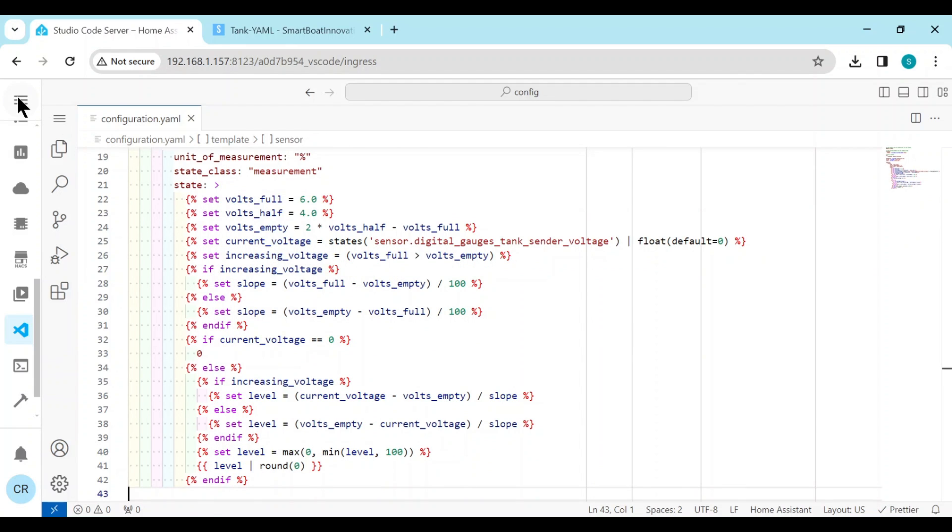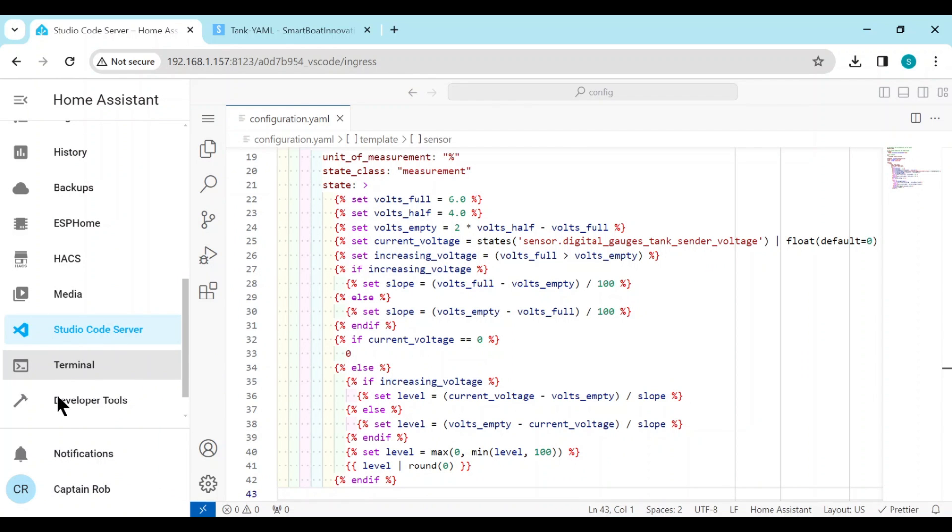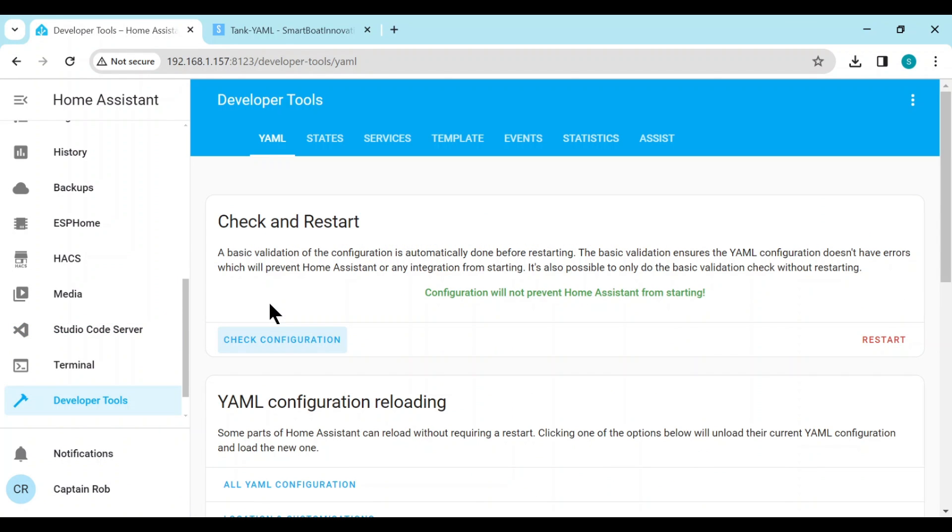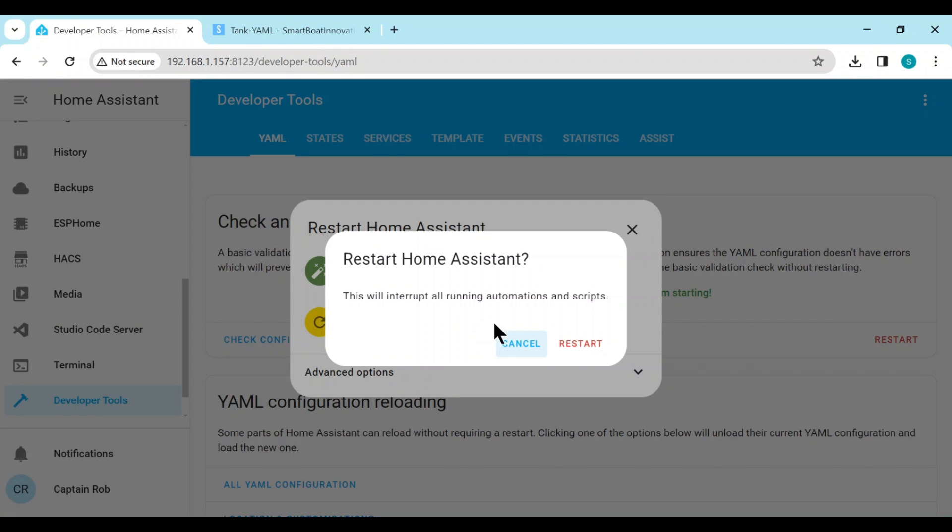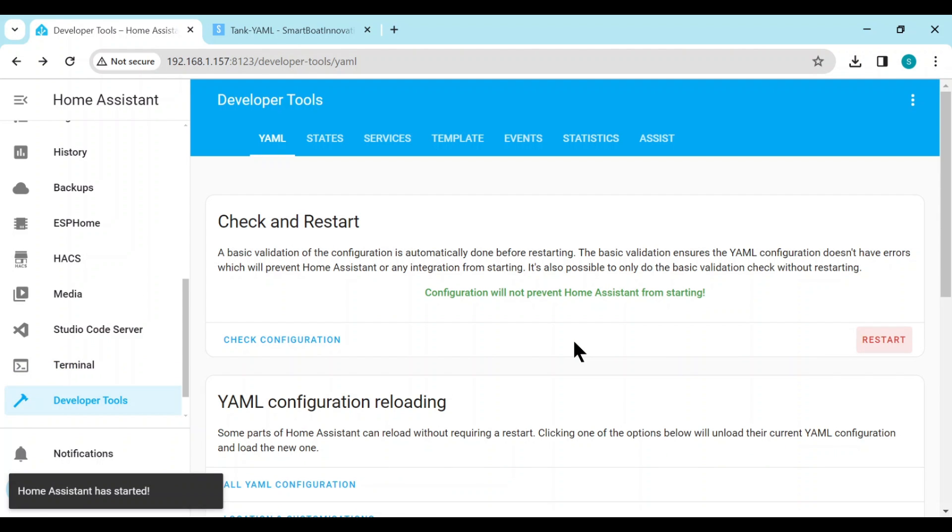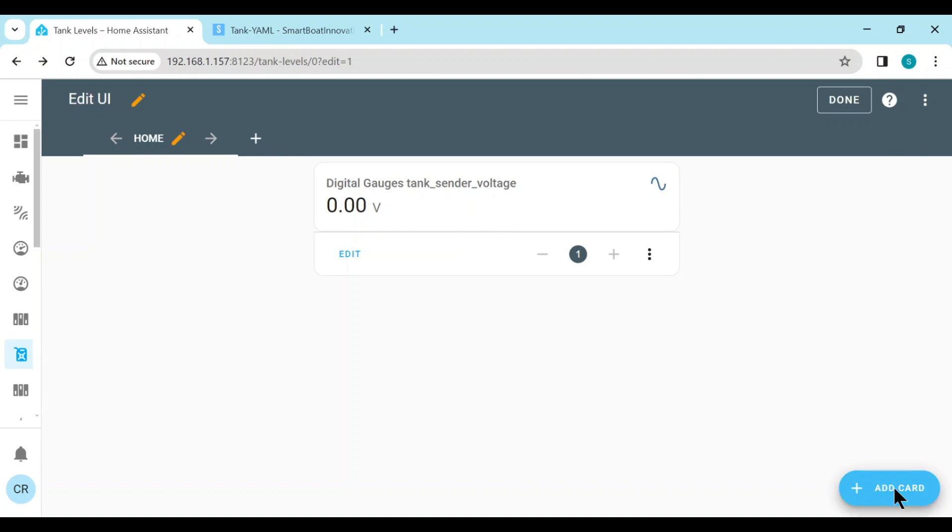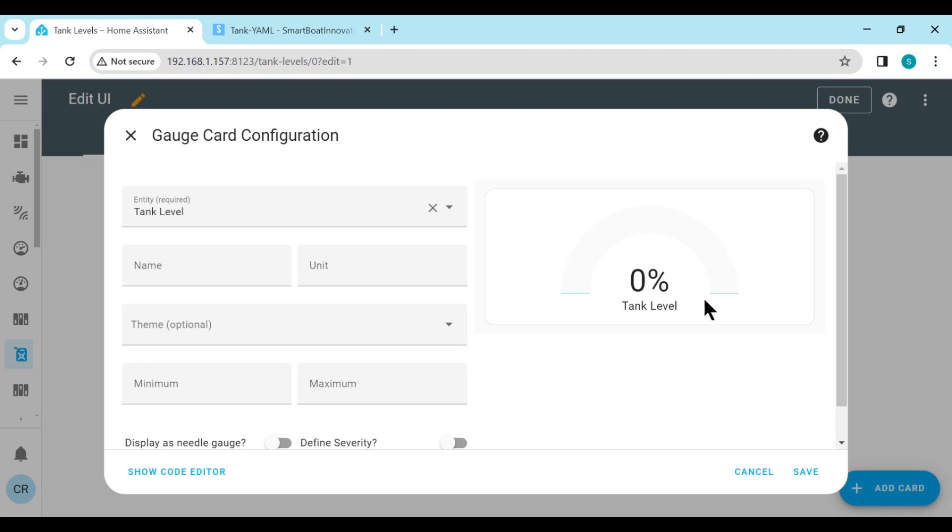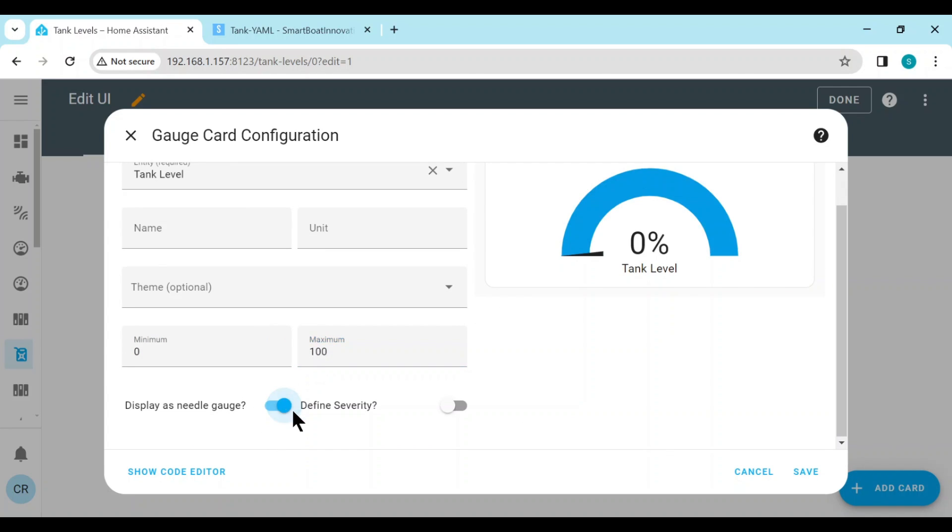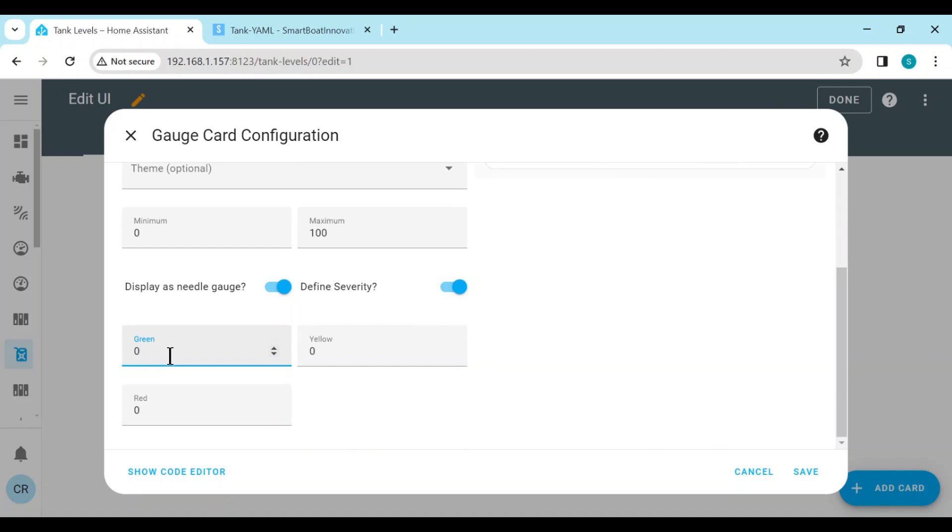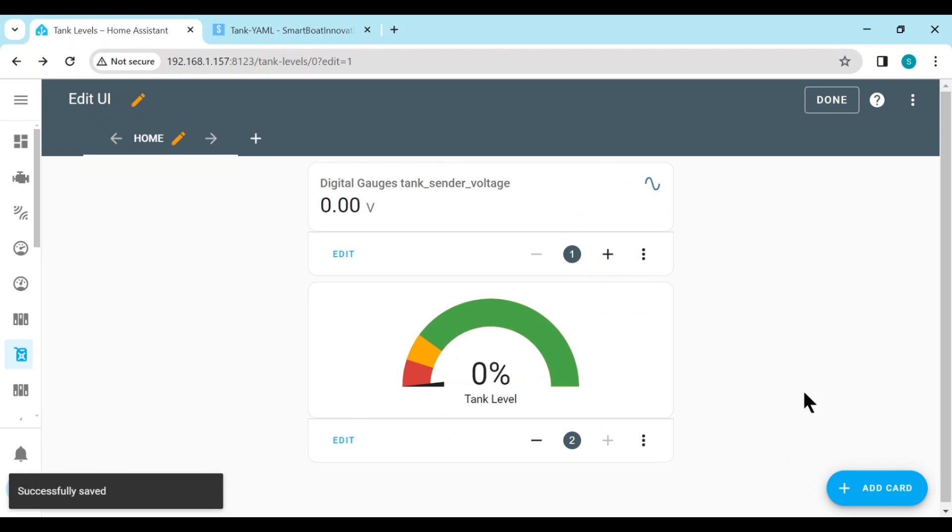And then we have to do developer tools, check the configuration, make sure it's okay. And then we start home assistant. Now let's go add a gauge for the template sense that we just created. Add card. Gauge. Tank level we need. 0% to 100%. Needle gauge. Yes. Severity. Yes. And let's go. 20. 10. 0. Save that.